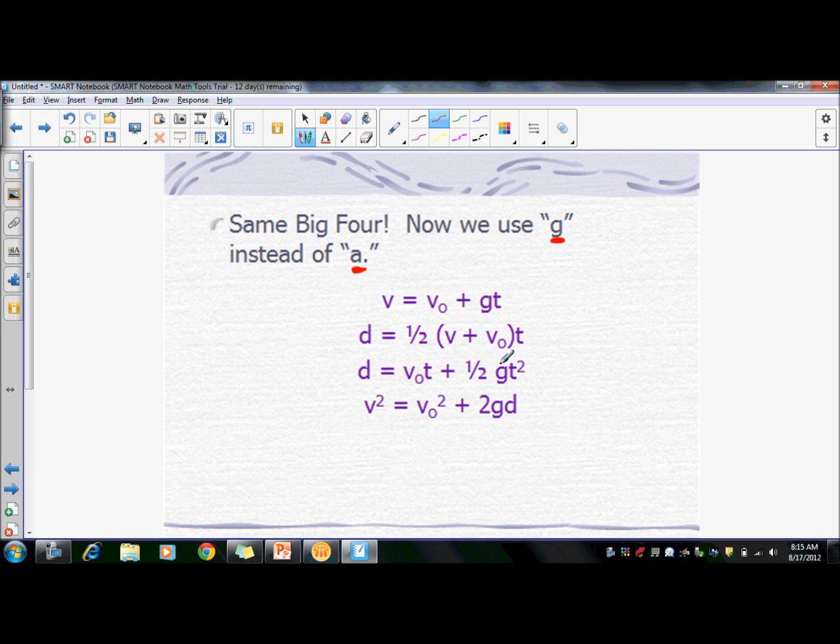V equals v naught t plus one half gt squared. And then v squared equals v naught squared plus two gd. So always g if you're dealing with gravity.